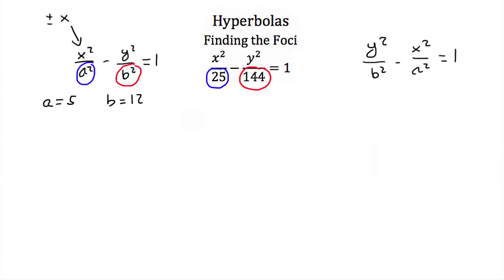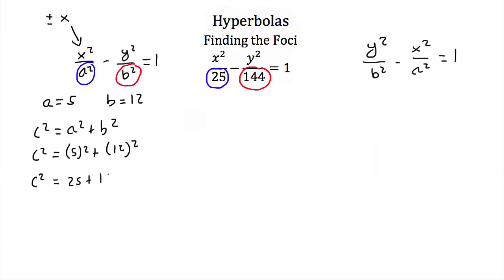To find the foci, we use c squared equals a squared plus b squared. Plugging in, c squared equals 5 squared plus 12 squared, which gives c squared equals 25 plus 144 equals 169. Taking the square root, c equals 13. Since c is a distance, we only use the positive value: c equals 13.